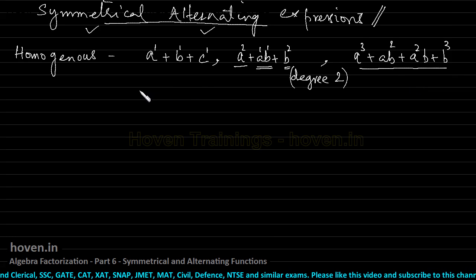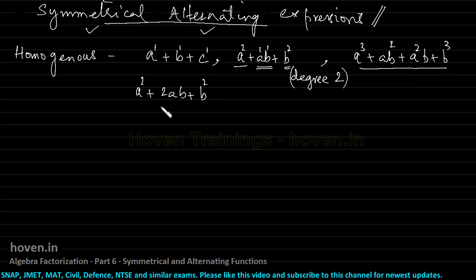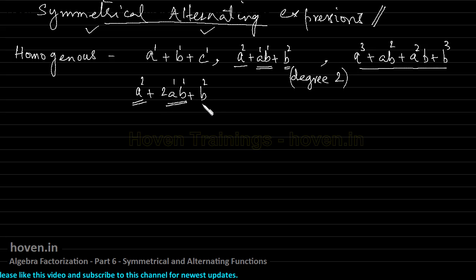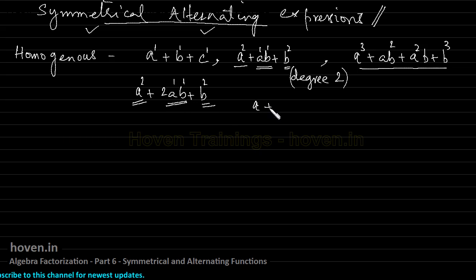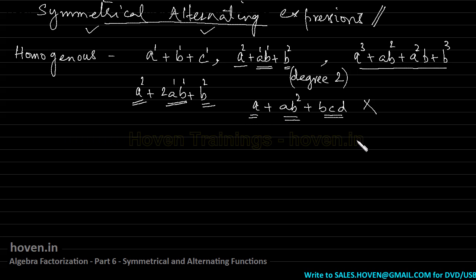Another example: a squared plus 2ab plus b squared is a homogeneous expression in degree 2, because the degree of each term is 2. However, a plus ab squared plus bcd is not a homogeneous expression, because the degree of a is 1, of ab squared is 3, and of bcd is 3 — the degrees of all terms are not exactly the same.